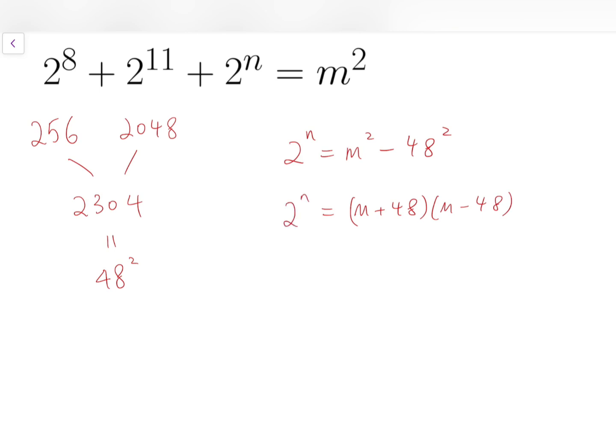And the product is the power of 2. If the product equals a power of 2, both terms, m + 48 and m - 48, must be both powers of 2.